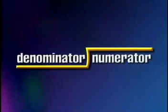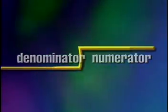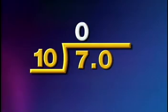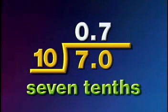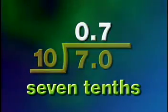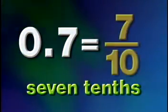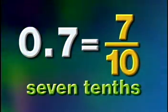Another way of describing how much pizza Norbert can eat is by using a decimal. To express a fraction as a decimal, we divide the numerator by the denominator. In Norbert's case, we divide seven by ten. We call this seven tenths, or 0.7. We can say that Norbert has eaten seven tenths of his pizza.